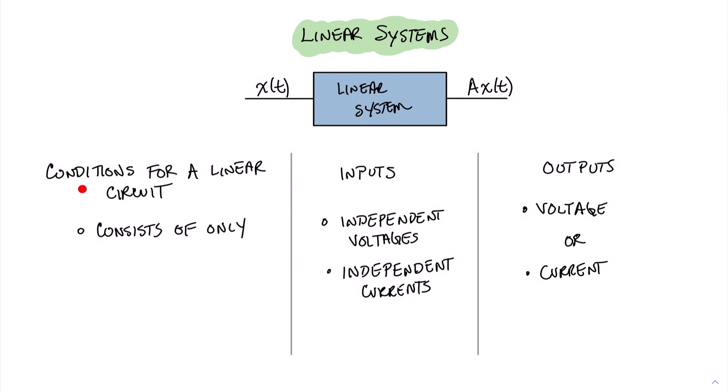So the question is, what conditions do we have for a linear electrical circuit in order to make sure that we can put the principle of superposition into practice? In this case, the circuit must consist only of resistors, independent sources, and dependent sources.